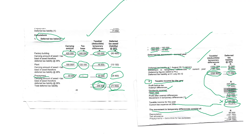The movement in temporal difference consists of depreciation of 85,000, less the tax allowance as given, less prepayments deductible for tax purposes. The tax allowance gives us 106,750 — the same amount as the movement in temporal differences. This is just an additional way of proving the movement in temporal difference, to reconcile the amounts and confirm you have the right figure.